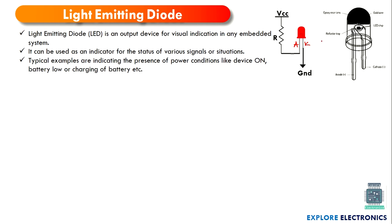What is inside the LED? The LED will have a LED chip inside, a reflector tray, an epoxy resin lens, and a gold wire. How do we identify the cathode and anode? The anode will be the longer terminal and the cathode will be the shorter terminal, so we can identify them accordingly.